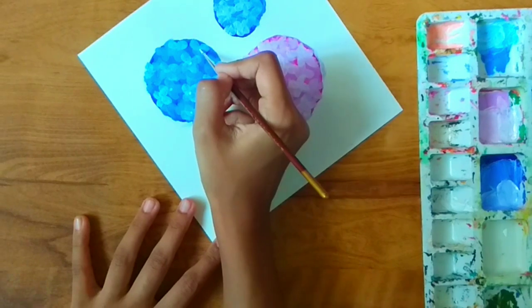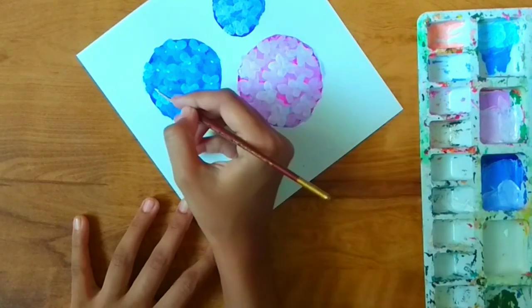Once it's all dried, make some white dots as the center of the little flowers.